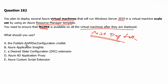Option A: The Publish-AzVMDscConfiguration commandlet uploads the Desired State Configuration to Azure Blob Storage, but it doesn't ensure that the virtual machine will have NGINX installed after it is deployed. Therefore, this is the wrong answer. Option B is Azure Application Insights, which is an extension of Azure Monitor and provides application performance monitoring. It has nothing to do with deployment or post-deployment tasks, so it is not the correct answer.